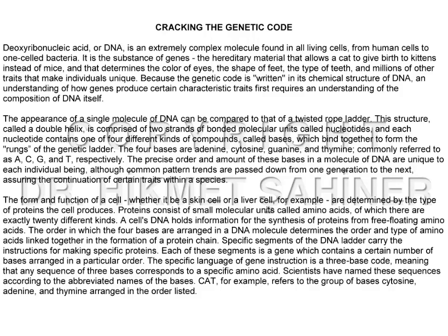The form and function of a cell, whether it be a skin cell or a liver cell, for example, are determined by the type of proteins the cell produces. Proteins consist of small molecular units called amino acids, of which there are exactly 20 different kinds. A cell's DNA holds information for the synthesis of proteins from free-floating amino acids. The order in which the four bases are arranged in a DNA molecule determines the order and type of amino acids linked together in the formation of a protein chain.